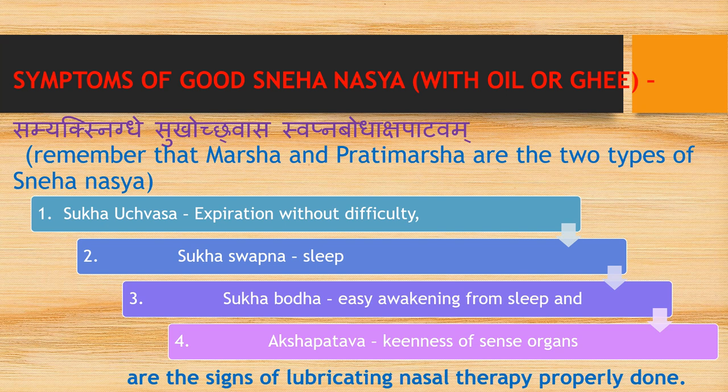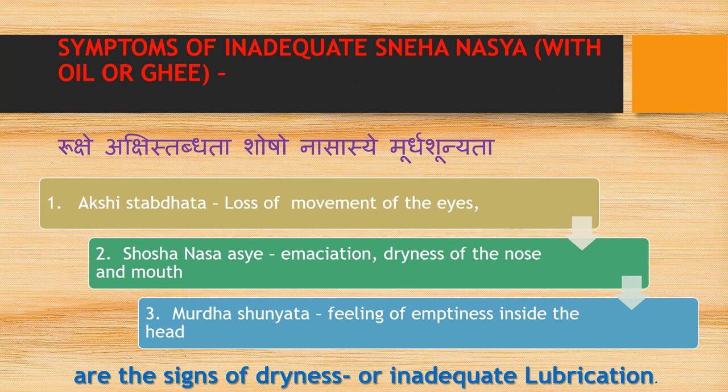Symptoms of good Sneha Nasya (oil or ghee nasal therapy): Marsh and Pradimarsha are the two types of Sneha Nasya. Signs of properly done lubricating nasal therapy include Sugha Ushwasa (expiration without difficulty), Sugha Nidra (soft sleep), Sugha Bodha (easy awakening from sleep), and Aksha Pradava (keenness of sense organs).